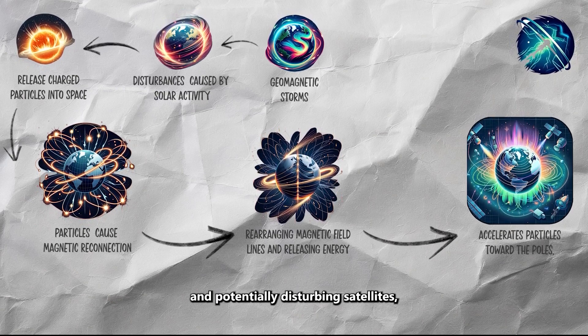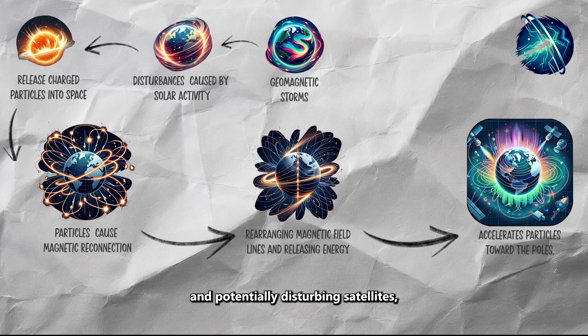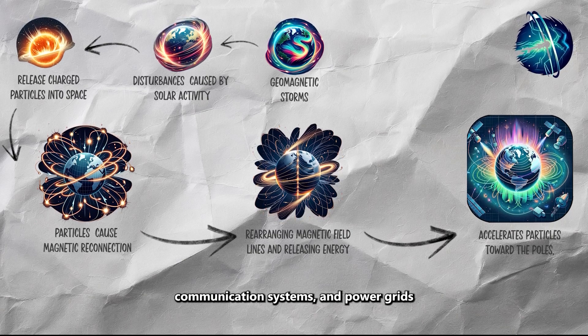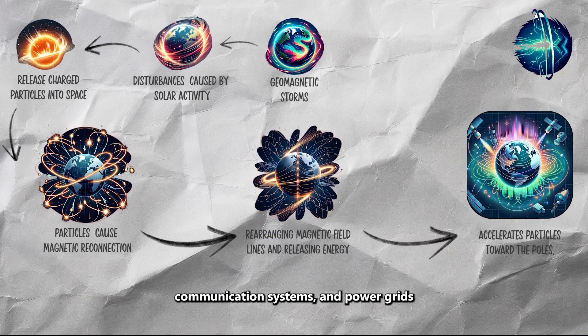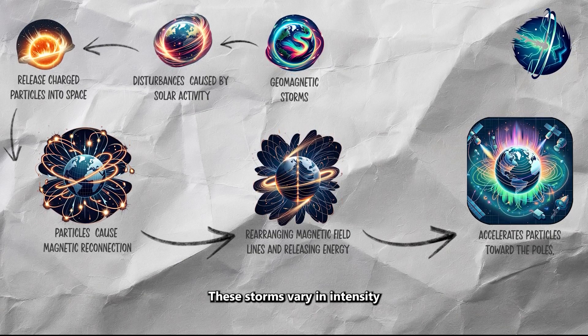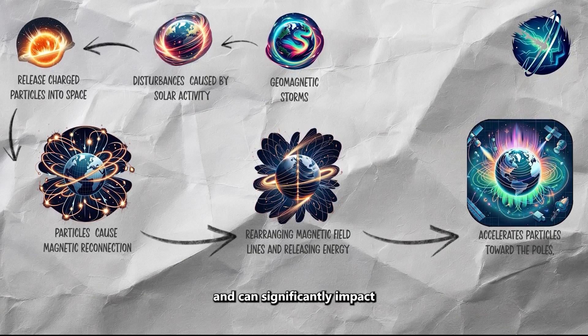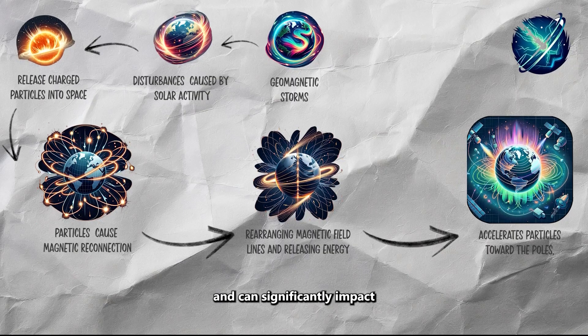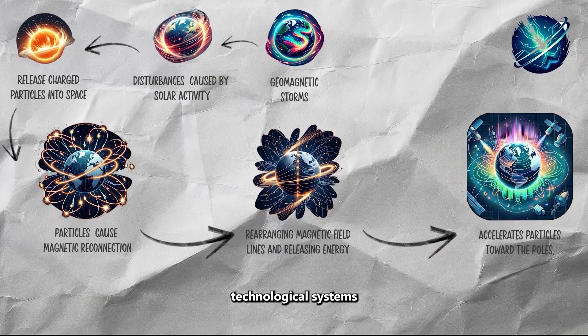This process accelerates particles toward the poles, resulting in auroras and potentially disrupting satellites, communication systems, and power grids. These storms vary in intensity and can significantly impact technological systems.